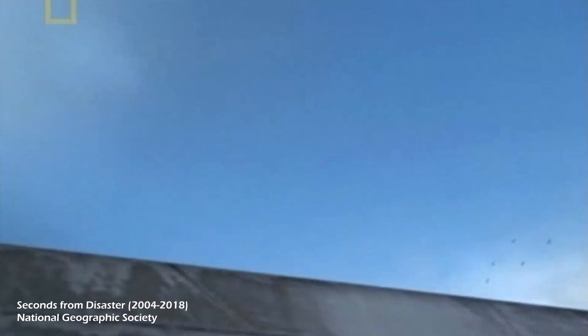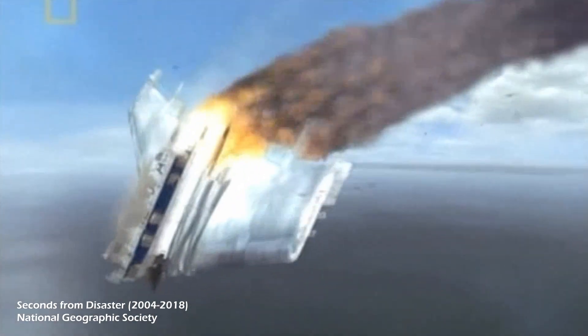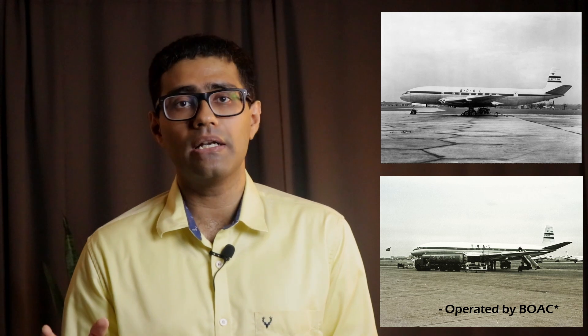In 1954, there were a series of accidents where the Comet-1 disintegrated mid-air a few minutes after take-off. The most famous ones being BOAC Flight 781 and South African Airways Flight 201. This grounded the entire Comet fleet.